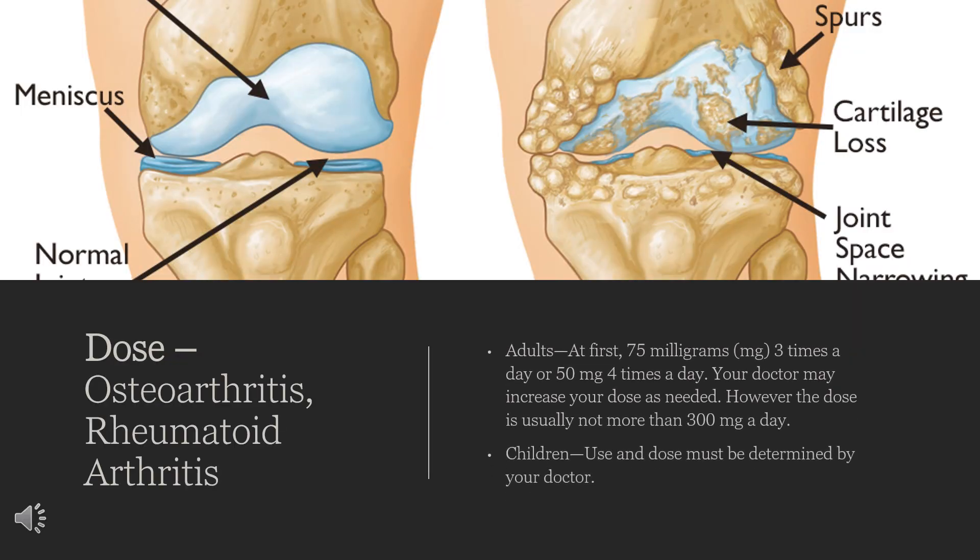The dose of this medicine will be different for different patients. The amount of medicine you take depends on the strength of the medicine, the number of doses taken each day, the time allowed between doses, and the length of time you take the medicine. For oral dosage form (capsules), for osteoarthritis and rheumatoid arthritis: Adults — at first, 75 mg three times a day or 50 mg four times a day. Your doctor may increase your dose as needed; however, the dose is usually not more than 300 mg a day. Children: use and dose must be determined by your doctor.